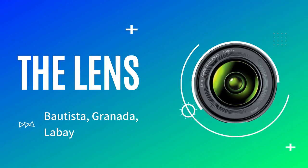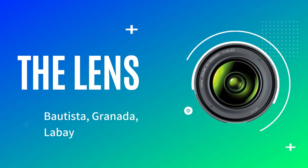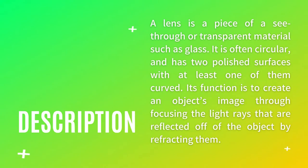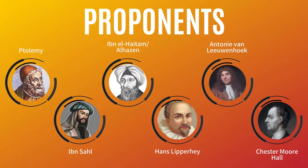We would like to share with you today an important contribution of physics: the lens. A lens is a piece of see-through or transparent material such as glass. It is often circular and has two polished surfaces with at least one of them curved. Its function is to create an object's image through focusing the light rays that are reflected off of the object by refracting them.